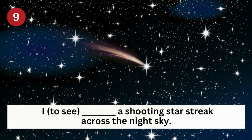Number nine: I ___ a shooting star streak across the night sky. What was the past tense of to see? Saw. I saw a shooting star streak across the night sky.